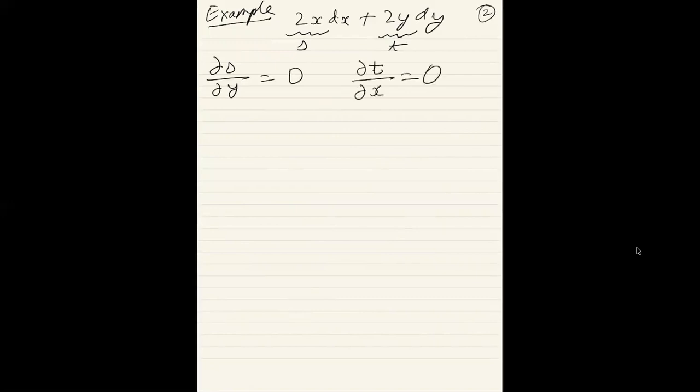Let's start with just a simple mathematical example. Let's consider the differential 2x dx plus 2y dy. So here our s of x,y is 2x and t of x,y is 2y. Let's do our test: partial s by partial y is equal to zero because there is no y dependence, and partial t by partial x is equal to zero. So there is no x dependence. So in this case it is indeed an exact differential.